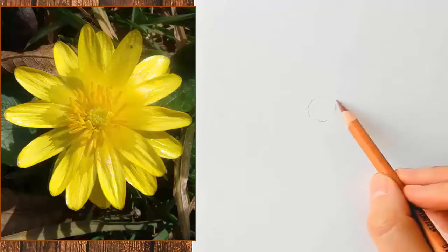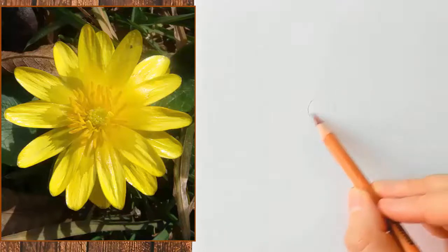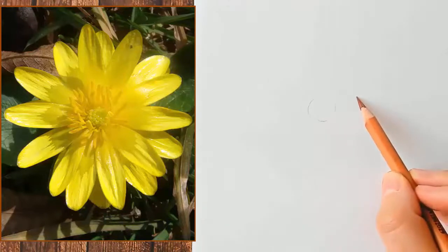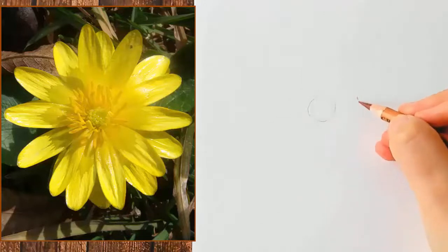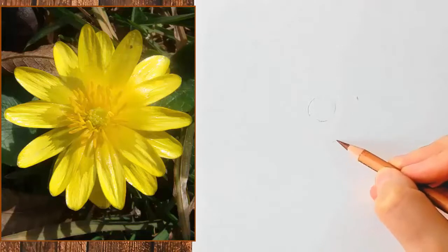I estimate, but you can measure if you want. The achenes are about one-fifth of the half of the flower. The second circle is about three times the diameter of the first circle.